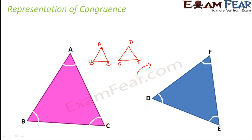So what does that mean? That means there are vertices of the triangle which are corresponding to each other. For example, A and D are corresponding vertices. Similarly, B and E are corresponding vertices, and C and F are corresponding vertices. There is no equality basically, but the role which vertex A plays in triangle ABC is the role which vertex D plays in triangle DEF — so vertex A is in correspondence with vertex D. Similarly, vertex B is in correspondence with vertex E, and vertex C is in correspondence with vertex F. So this is the concept of correspondence.